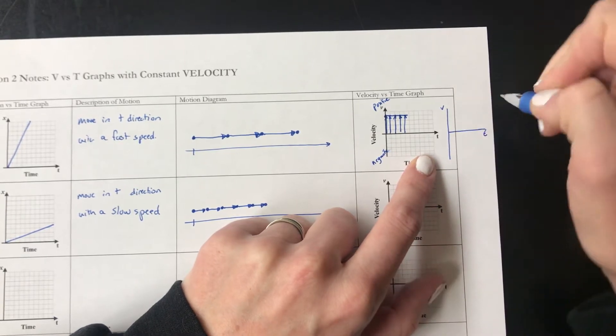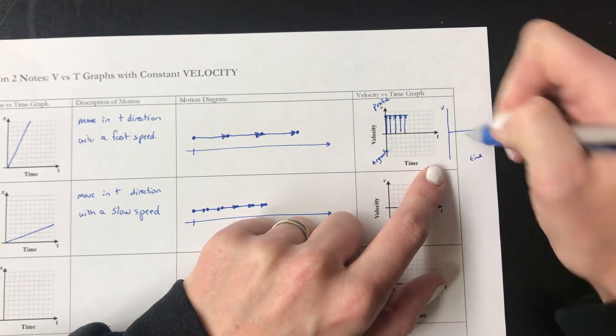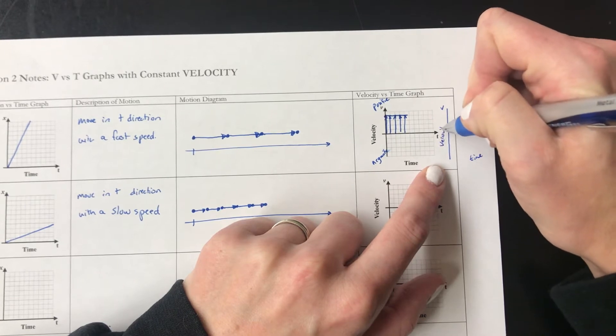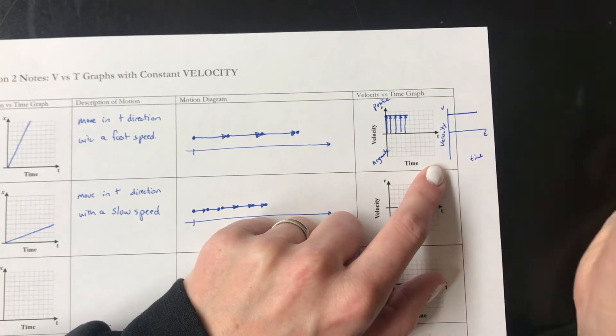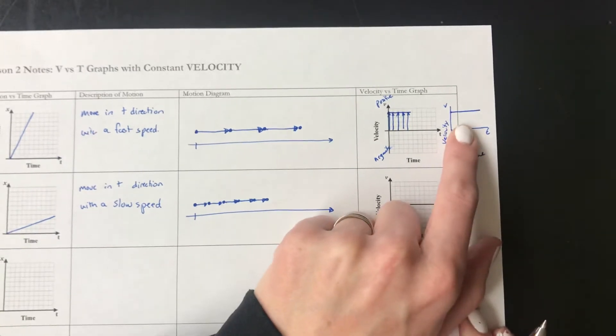My actual graph doesn't include those arrows. Let me kind of redraw this over here. So my V vs. T graph with time and velocity on it is just the line. So I leave off the arrows and I end up with a line like this.